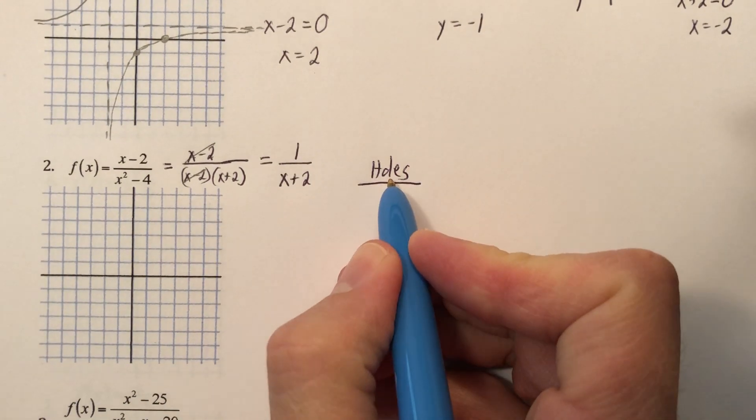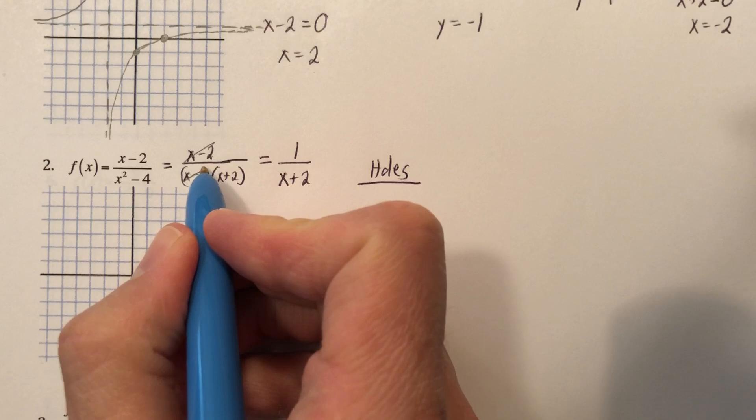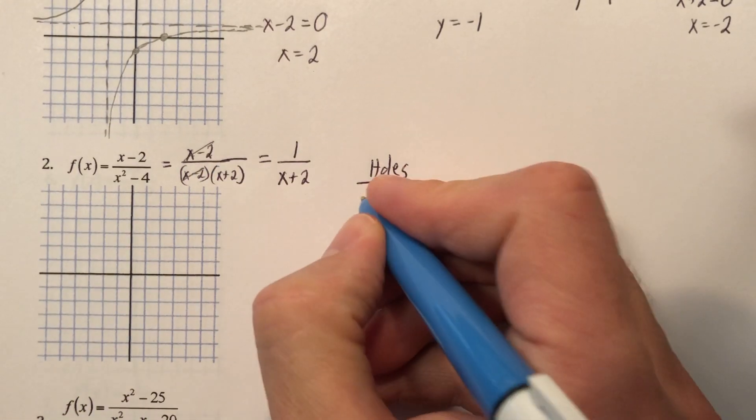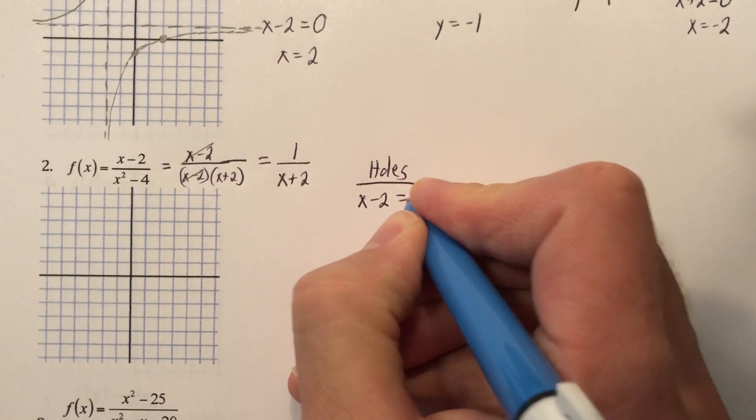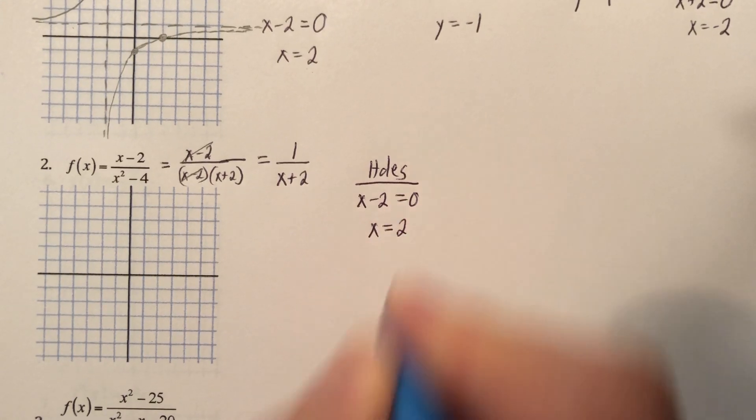So a hole is when I crossed something out. What did I cross out? I crossed this out. I'm going to set that equal to 0. So I have a hole at x equals 2.